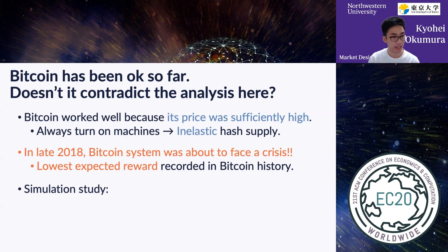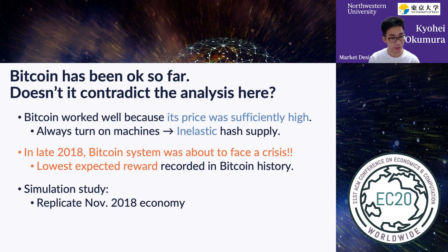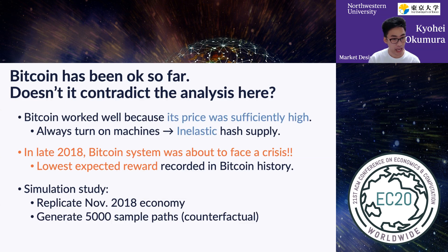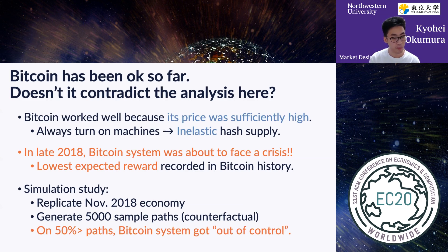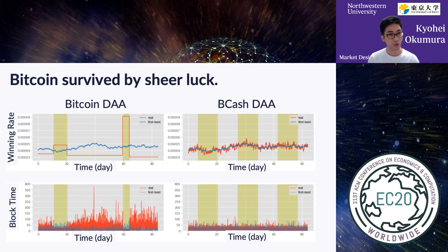We conducted a simulation study. We replicated the economy of November 2018 and generated 5,000 sample paths — a counterfactual analysis. We observed that with probability more than half, the Bitcoin system got out of control. In other words, our results suggest that Bitcoin survived that period by sheer luck.